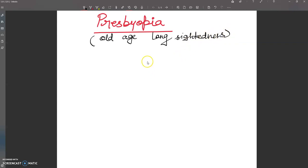It is quite similar to long-sightedness and it affects older people more than 40 years. You can write here: it affects older people more than 40 years of age.